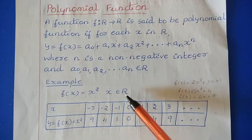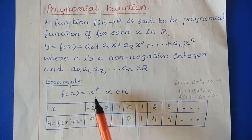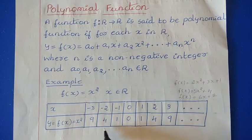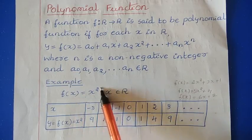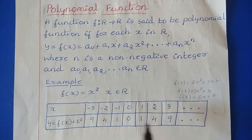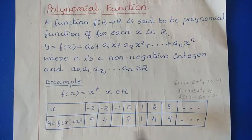Now for this function, let us find the range values. f(−3) = (−3)² = 9. f(−2) = (−2)² = 4. f(−1) = (−1)² = 1. f(0) = 0² = 0. For positive values: f(1) = 1² = 1, f(2) = 2² = 4, f(3) = 3² = 9. In this case, whatever value you give — negative or positive — you get a positive value for this polynomial function.